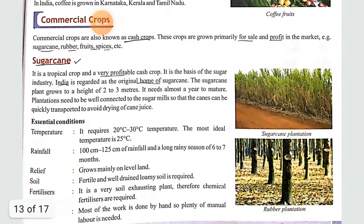Then we come to commercial crops. Commercial crops are also known as cash crops — it can be asked what commercial crops are known as, and the answer is cash crops. These crops are grown primarily for sale and profit in the market. Examples include sugar cane, rubber, fruits, spices, etc.